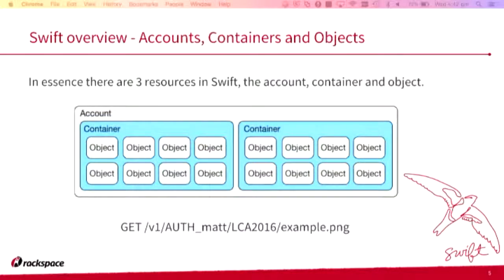When sending a request to Swift you get something like: GET /v1/auth_mat/LCA_2016/example.png. The v1 is the API version — Swift is still on API version one. auth_mat would be my account, LCA_2016 is the container, and example.png is the object I'm trying to pull out.